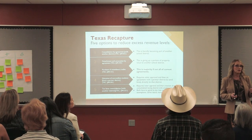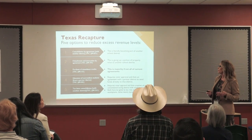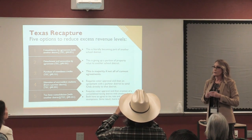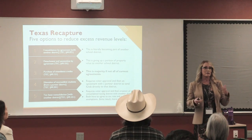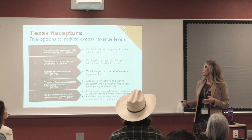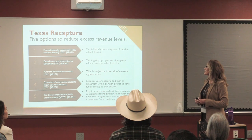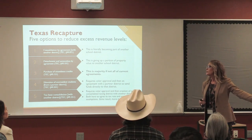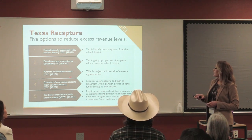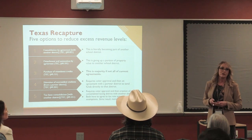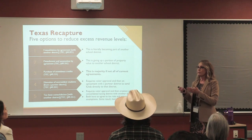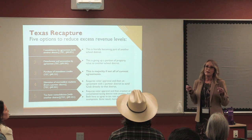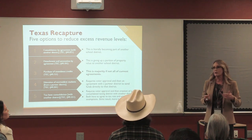Once TEA determines a school district will have more revenue than it's entitled to, they provide five ways to get rid of that extra revenue. One: consolidate with another district — literally going to a neighboring district like Johnson City or Wimberley and combining property revenues. Two: detach — give up part of your value to another school district, which gets really messy. Three — and 99.99 percent of districts use this — is purchase of attendance credits: sending your excess local revenue as a payment to the state.